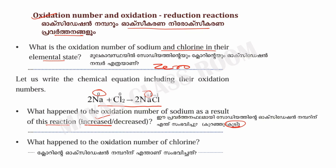What happened to the oxidation number of chlorine? The oxidation number of chlorine is zero and it becomes minus 1. That would be a decrease.